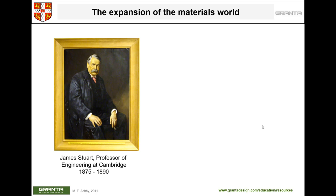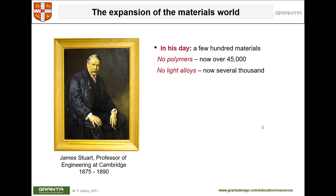James Stewart was the first professor of engineering at Cambridge University. At his time, there were only a few hundred materials — no synthetic polymers, no light alloys like aluminum alloys, and no man-made composites. Now we have at least 45,000 known polymers, several thousands of alloys, and theoretically infinite composite materials by combining different material categories.